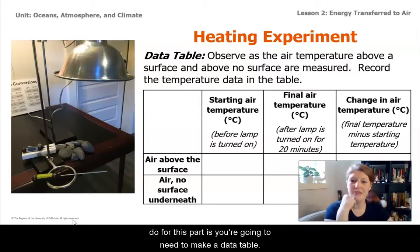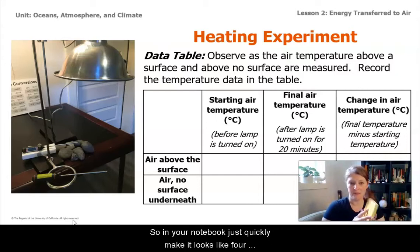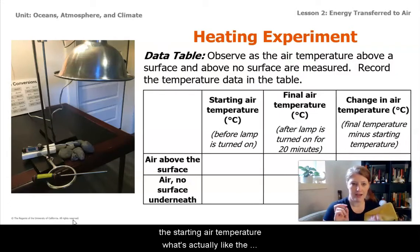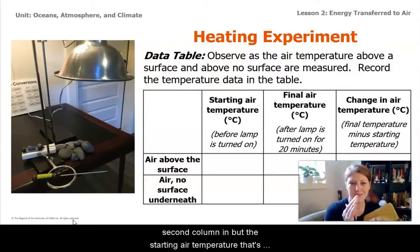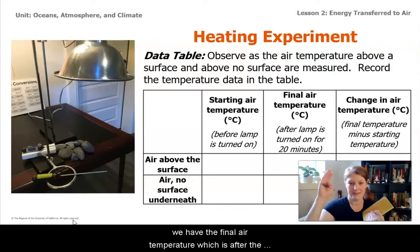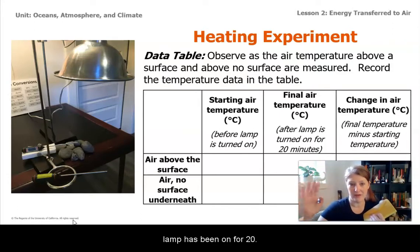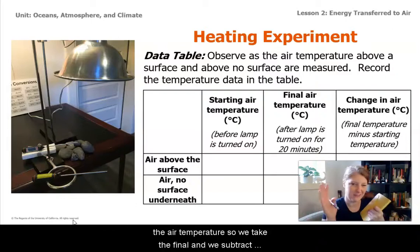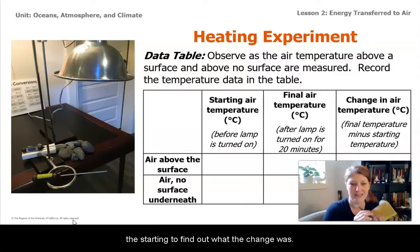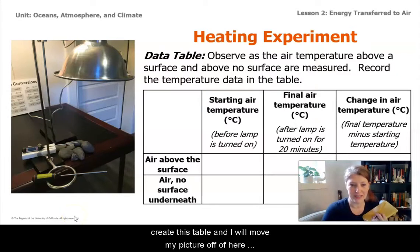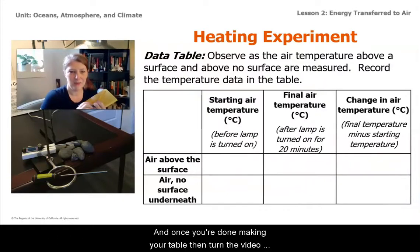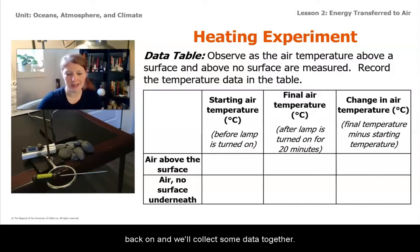So what you're going to need to do for this part is make a data table. In your notebook, make a table with four columns and three rows. The first data column is the starting air temperature — before the lamp is turned on. The next column is the final air temperature — after the lamp has been on for 20 minutes. Then we'll do a quick subtraction: final minus starting to find out what the change in air temperature was. Pause the video here so you can create this table, and once you're done, turn the video back on and we'll collect some data together.